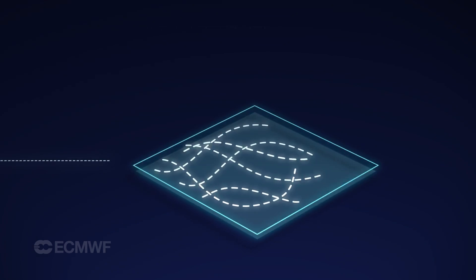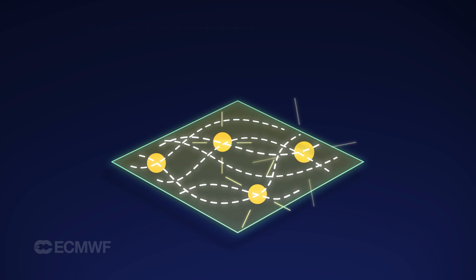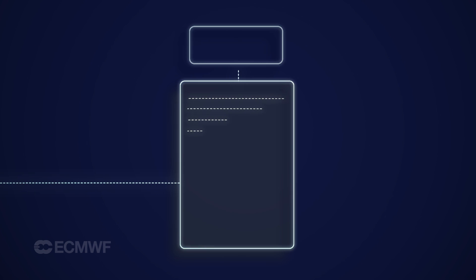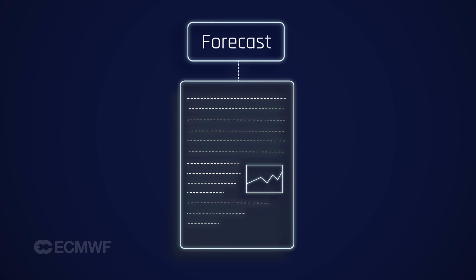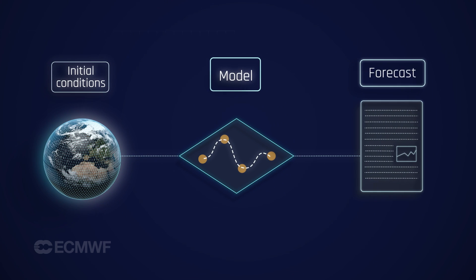Traditionally, people were just using one model, typically in one centre. They were just doing an analysis of the atmosphere, using one model, and then getting the forecast for the next few days. We were taking the best image of the atmosphere with the observations, the best model we could get, and we had one shot in the future to say what the forecast is.